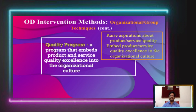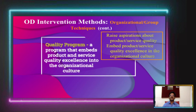The second important technique at the group level is the quality program — a program that embeds product and service quality excellence into the organizational culture. Examples include Total Quality Management and quality circles. These are related to quality improvement and advancement in the organization, depending on how group members work together as a team. We find quality circles and TQM models introduced by managers to improve performance. This raises aspirations about product and service quality and embeds quality excellence into the organizational culture, becoming a way of life for employees.